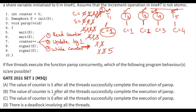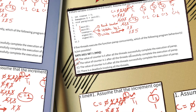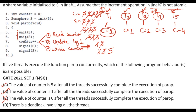So after all threads complete, counter value is 1 - option B is also possible. Let's check option C - whether counter can be zero. There are two wait operations and an increment on line 7. To successfully complete execution, each thread must execute line 7 at least once, which increments counter. So the minimum possible counter value is 1, not zero. Option C is not possible.